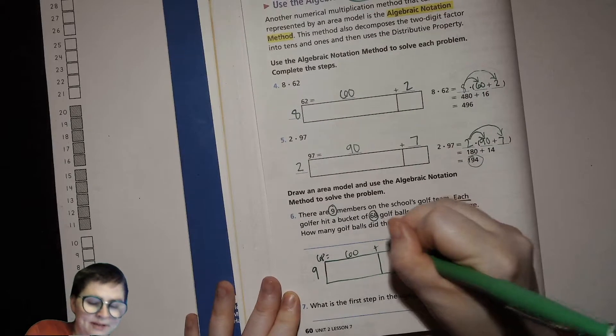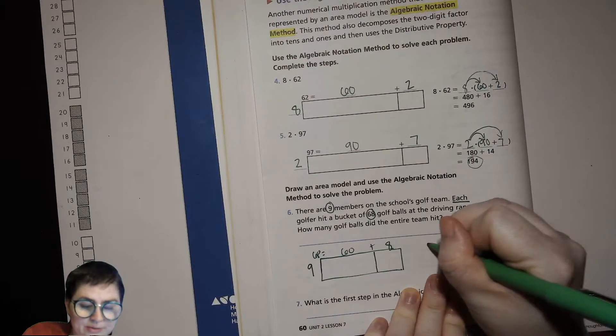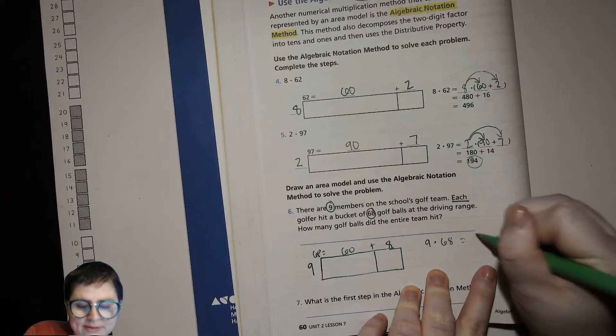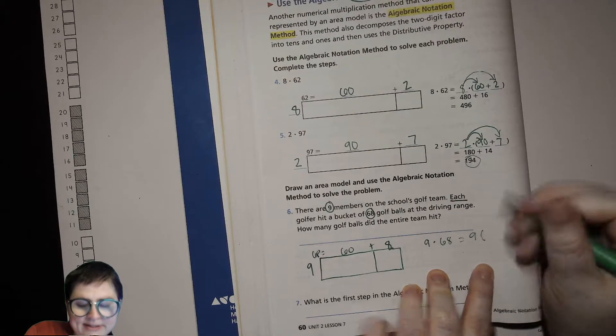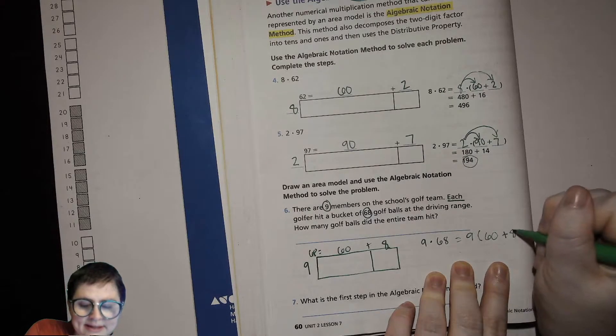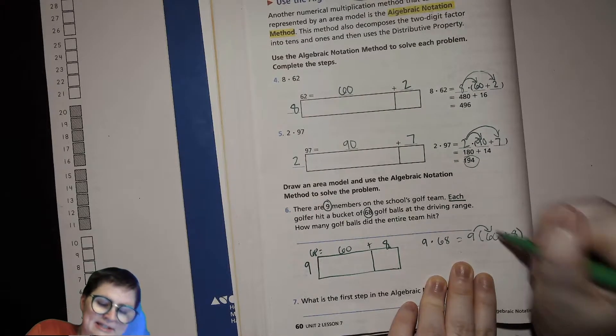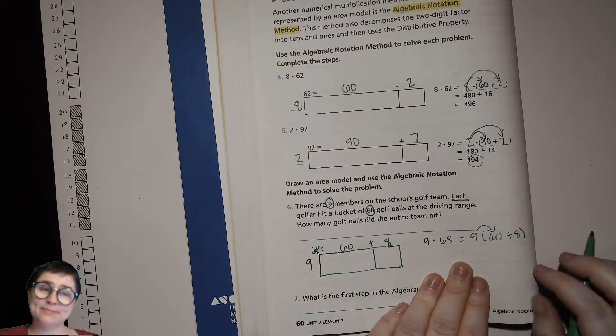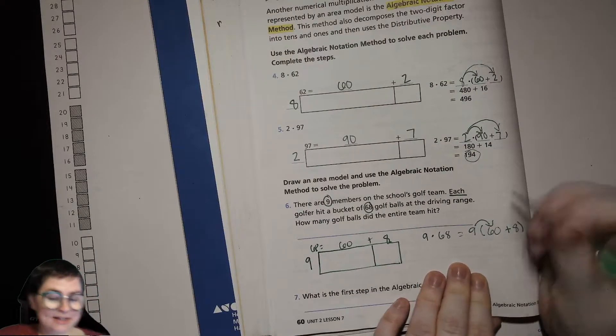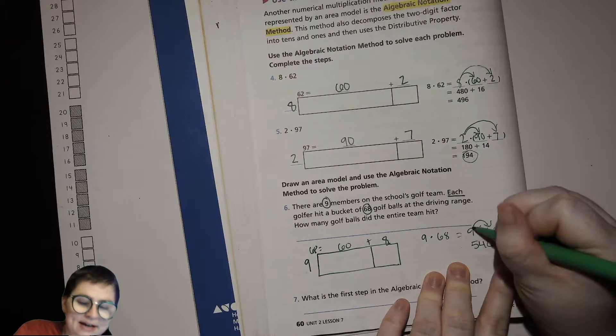We're going to put this line here to separate our tens and our ones. We'll have our single digit factor over here which was 9. Our other factor 68 is equal to 60 plus 8. Now we'll do our equation over here, so we're doing 9 times 68 and that equals 9 times parentheses 60 plus 8.